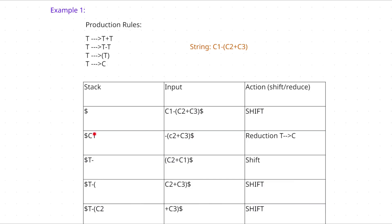Now check whether the element present in the stack matches any production rule. The first production rule has two elements — not matching. The second also has two elements — not matching. The third has one element but not matching. The fourth production rule is T → C. Consider C1 as C, so it matches. We replace C1 with T, performing a reduce action applying rule T → C.